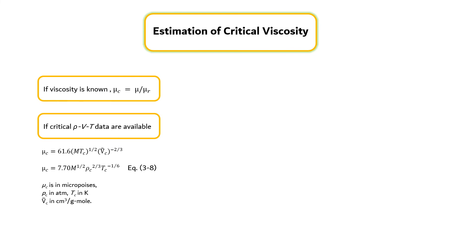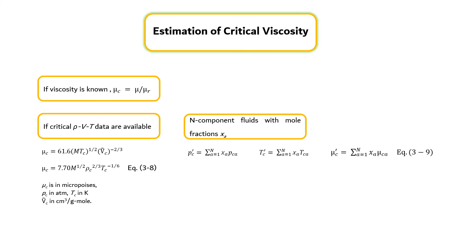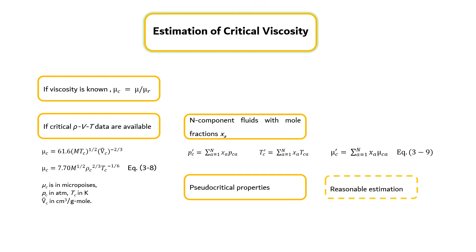The previous figure can also be used for rough estimation of viscosities of mixtures. For n-component fluids with mole fractions x_A, the pseudo-critical properties can be determined from equation 3.9. That is, one uses the figure exactly as for pure fluids, but with the pseudo-critical properties instead of the critical properties. This empirical procedure works reasonably well unless there are chemically dissimilar substances in the mixture, or the critical properties of the components differ greatly.